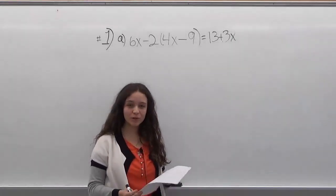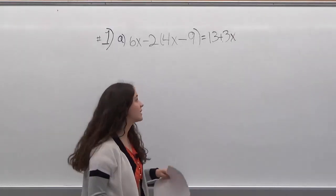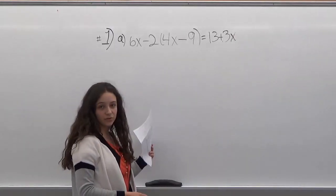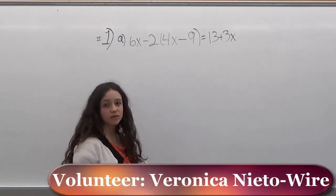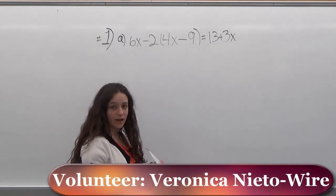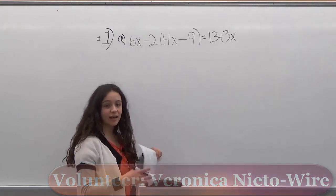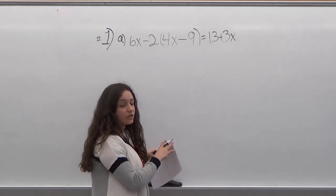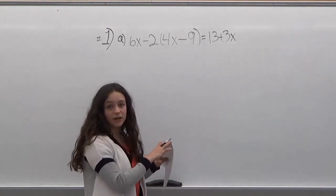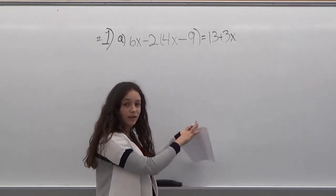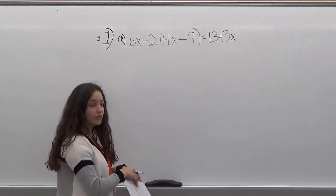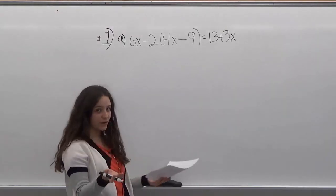Hello, welcome to Help Your Math. Today we're going to solve this equation for x, and we're going to do this by getting everything which has x on one side of the equation and everything that does not have x on the other side of the equation. So we can combine like terms and solve for x.